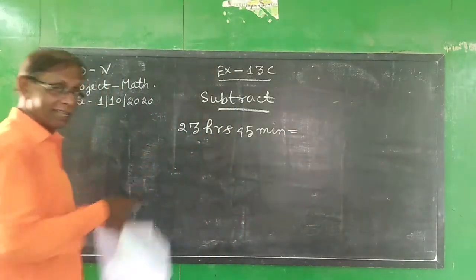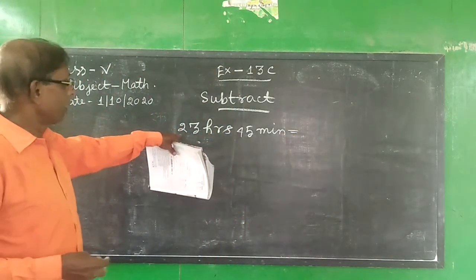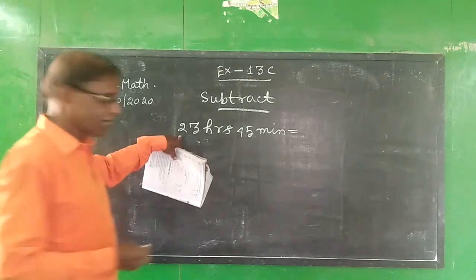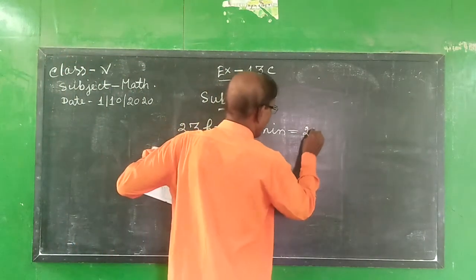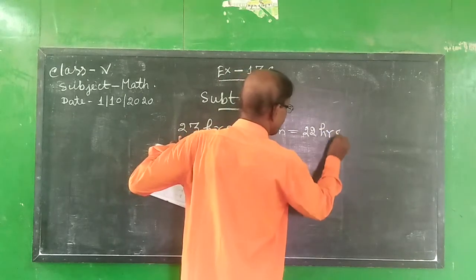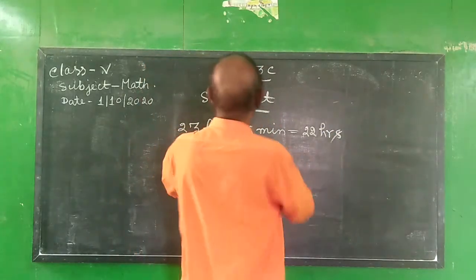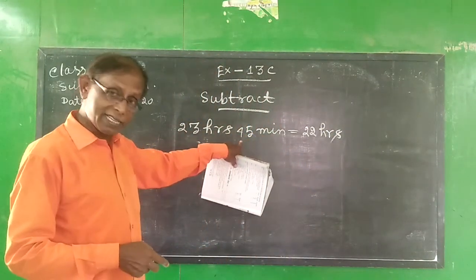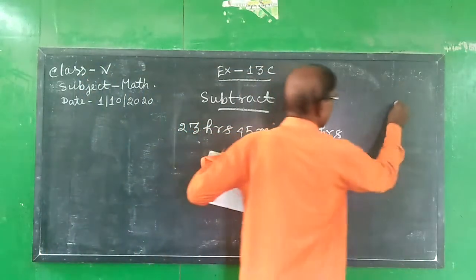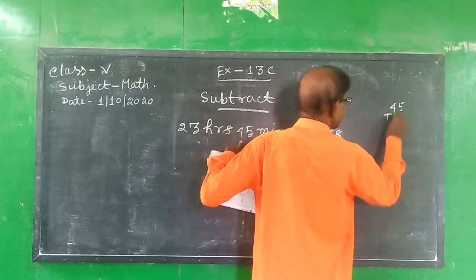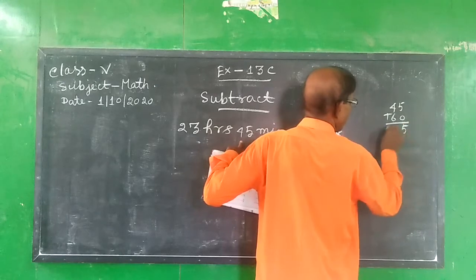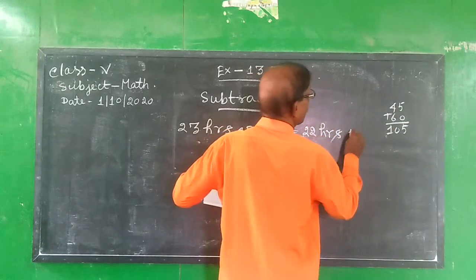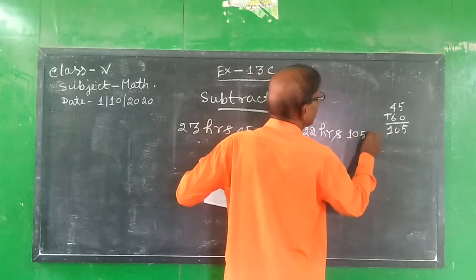Equally, we can write this as 22 hours, 45 plus 60 minutes, which is 105 minutes.